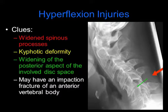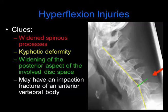Hyperflexion injuries are common injuries, especially with motor vehicle accidents. Clues include widened spinous processes, as we can see on this radiograph with the red arrow, kyphotic deformity, which we can see here with the yellow lines, as well as widening of the posterior aspect of the involved disc space as we see with the green line. There may be an associated impaction fracture of an anterior vertebral body.